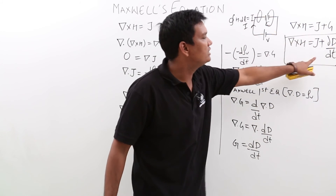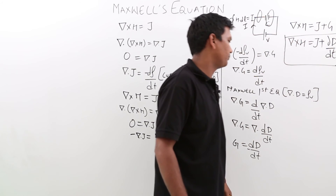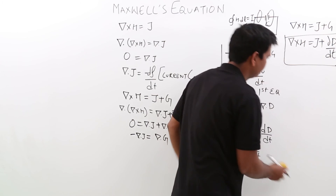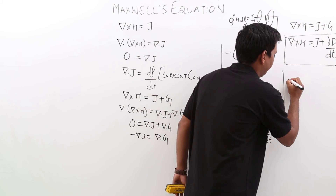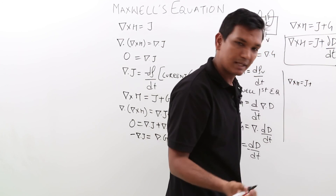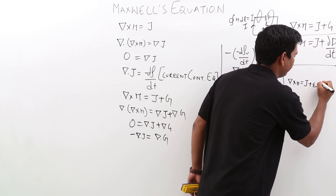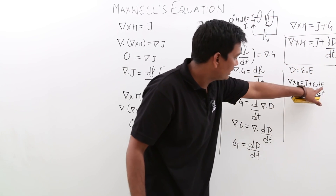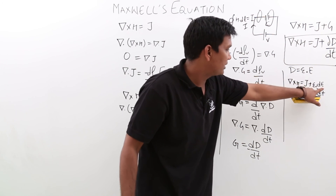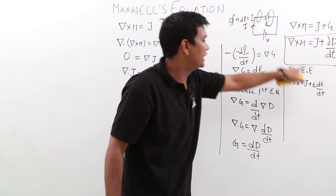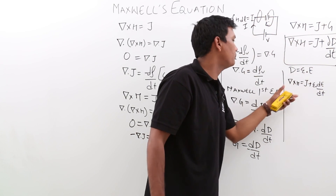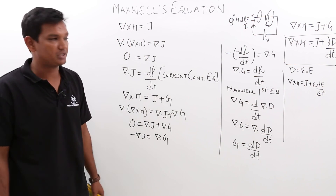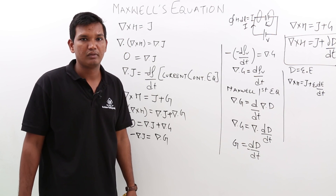So we have proved the Maxwell's fourth equation: del cross H equals J plus partial D by partial t. We can also rewrite D as epsilon dot E, so del cross H equals J plus epsilon times partial E by partial t. At every point, del cross H depends on current plus the electric field term. This is also called Maxwell's corrected equation. We will see more on this in the next lectures.